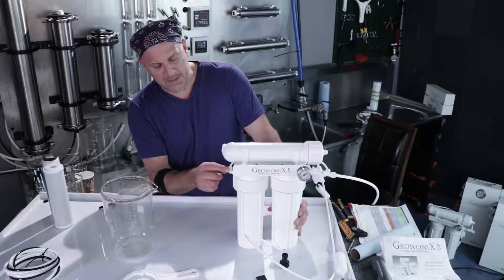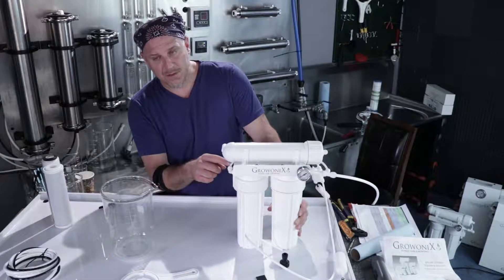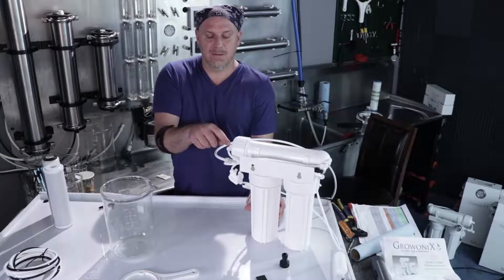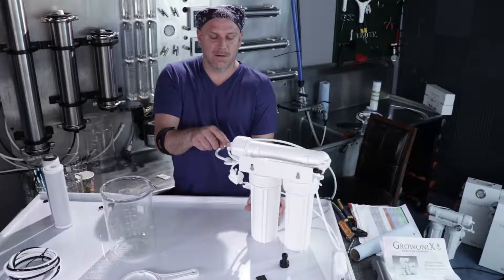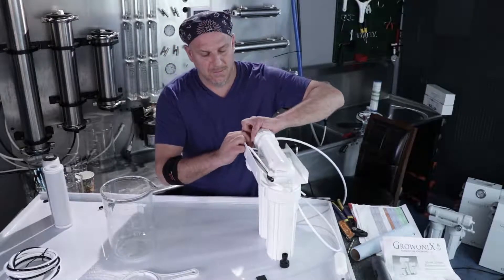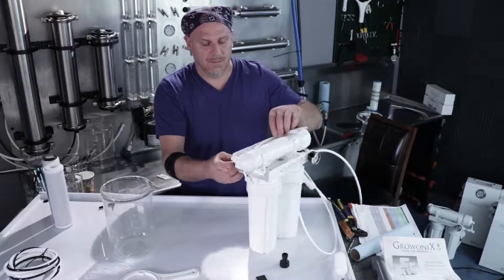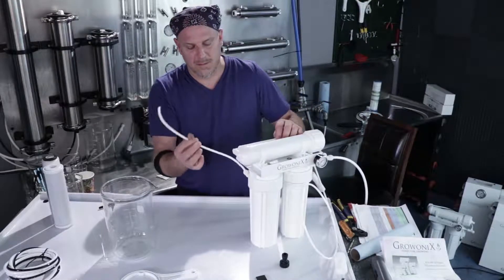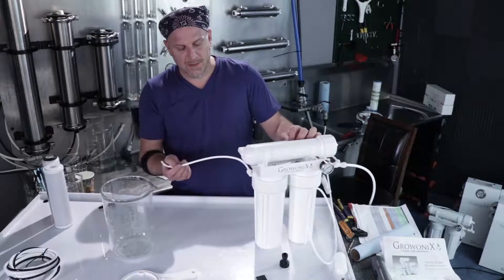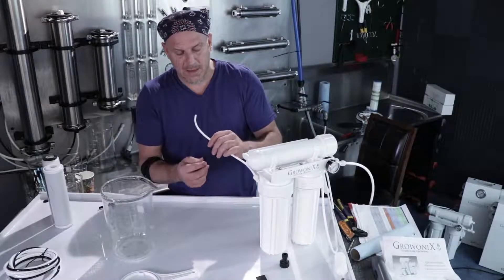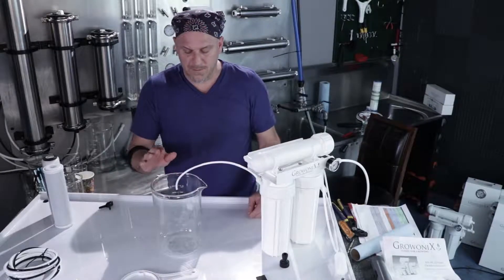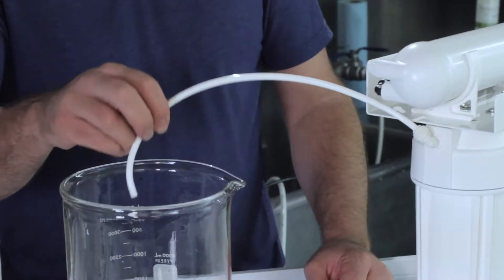So to flush the carbon what we do is we take the carbon output tube which feeds the input of the membrane on the other side of the filter. We're going to disconnect this tube and pull it back through right here. We're going to turn the water pressure on slowly and let this water flow out. We're going to flow into here so you can see it, this could flow down a drain.